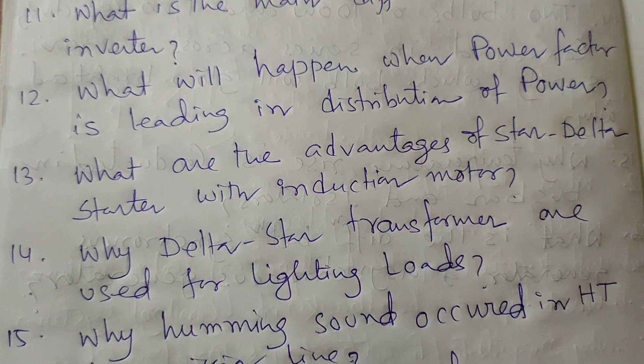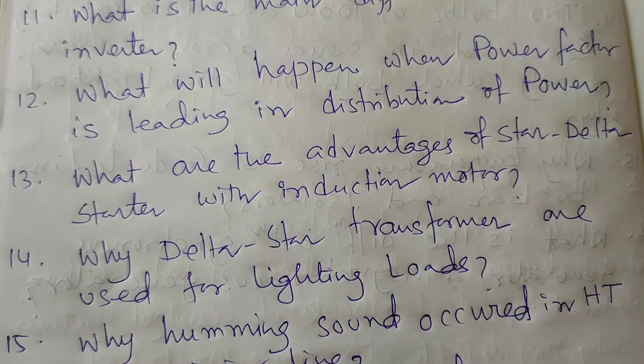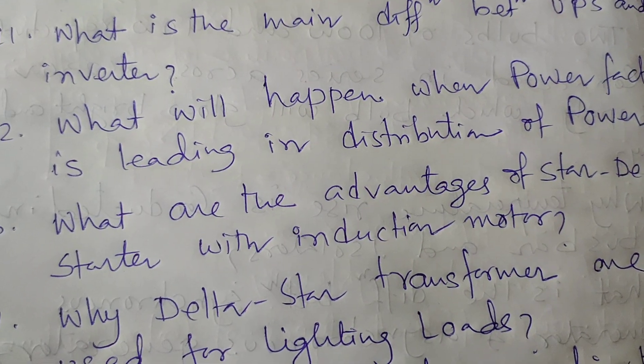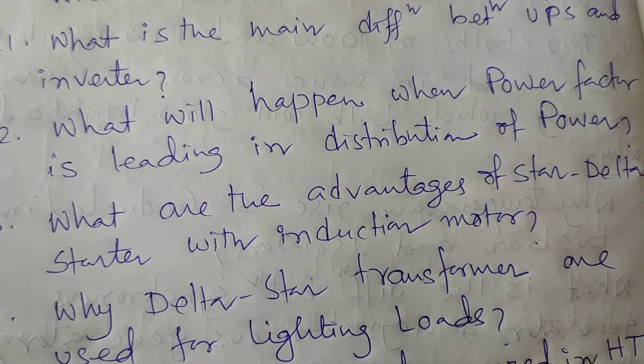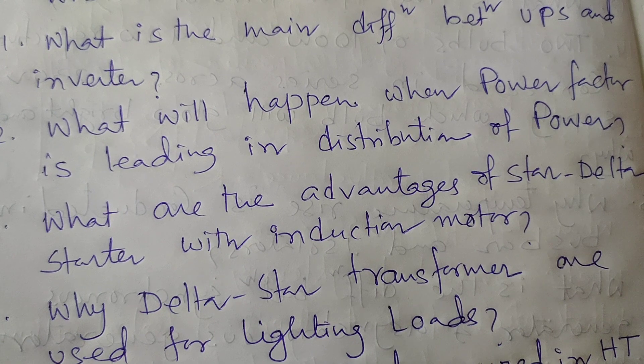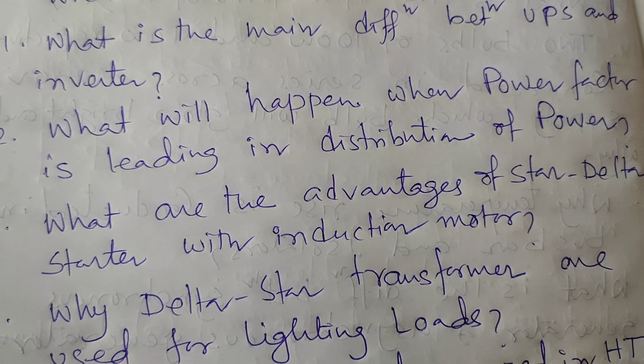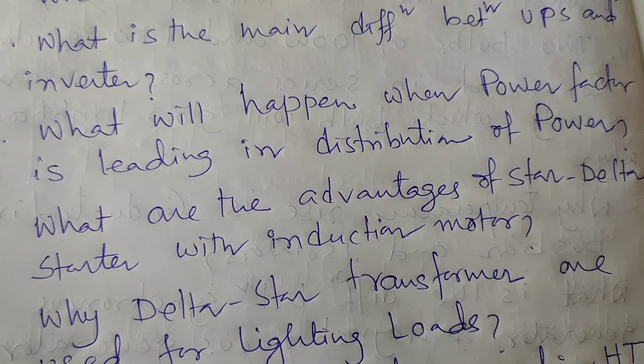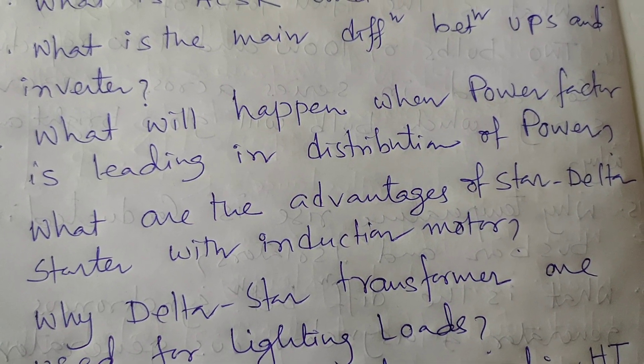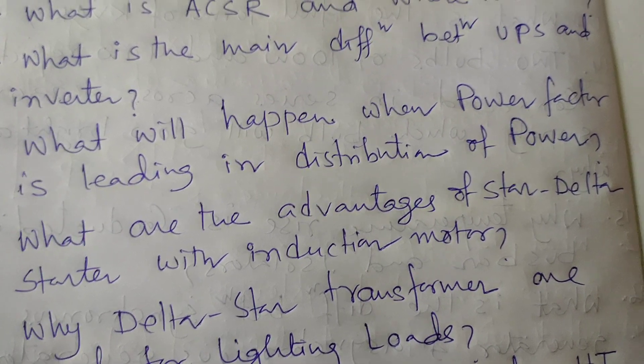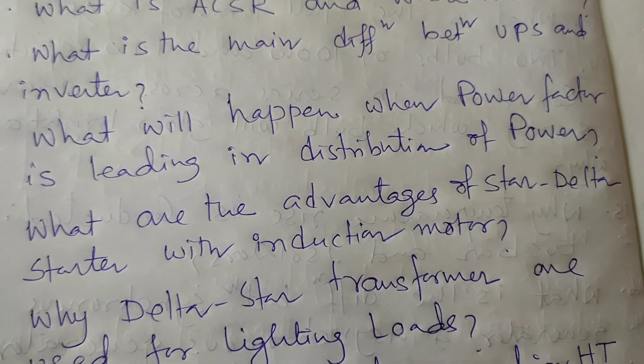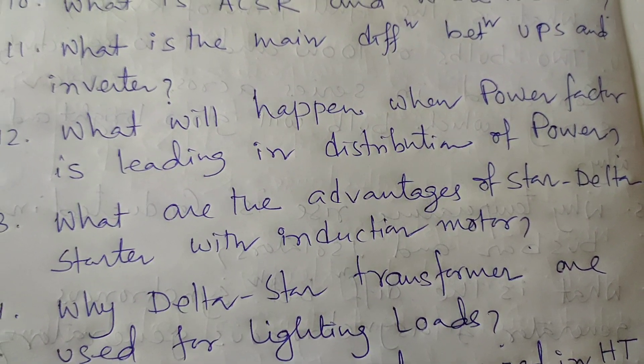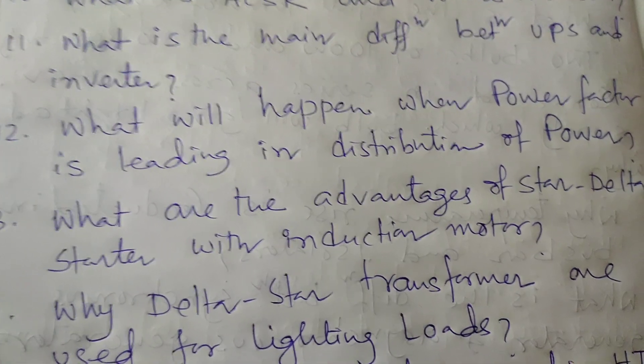Next question: What are the advantages of star-delta starter with induction motor? The main advantage of using star-delta starter is reduction of current during starting of the motor. Starting current is reduced to three to four times less than the current of direct online DOL starter. Hence, the voltage drop during starting is reduced.